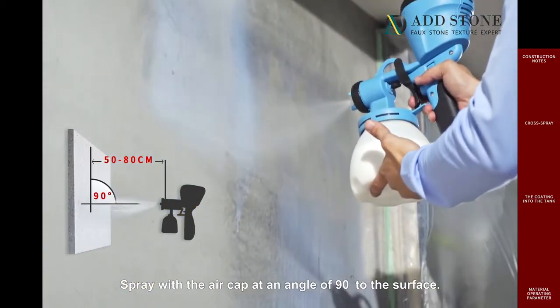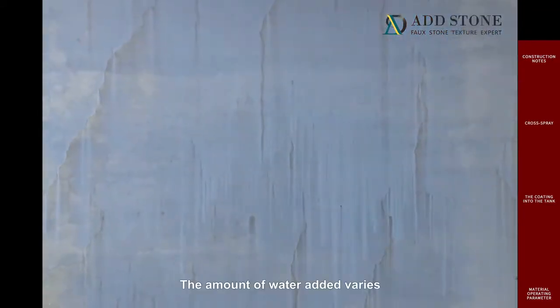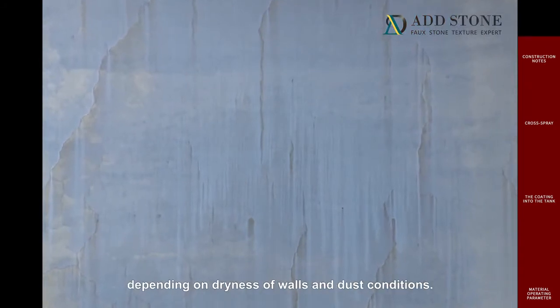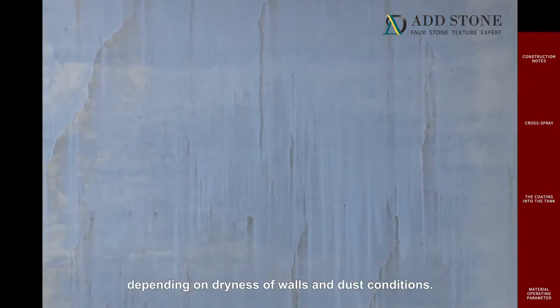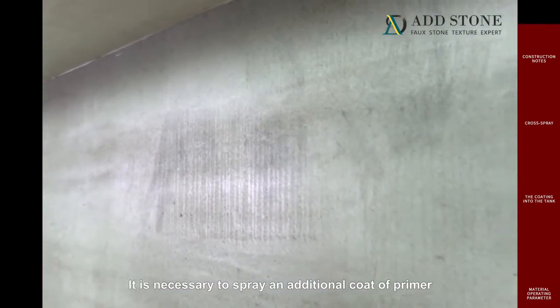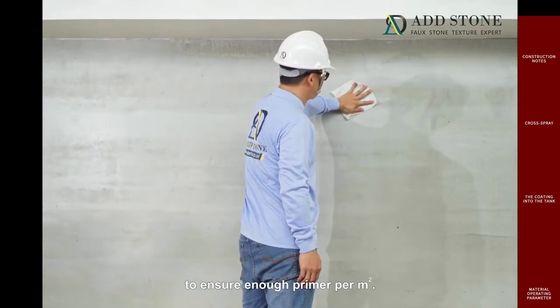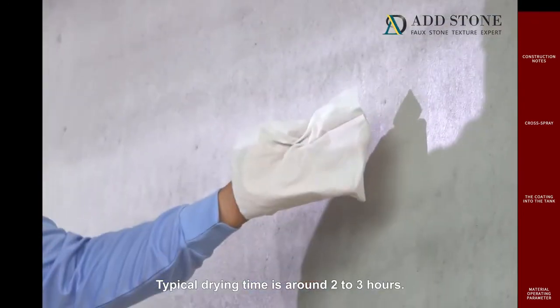Spray with the air cap at an angle of 90 degrees to the surface. The amount of water added varies depending on dryness of walls and dust conditions. If you add water at the ratio of 1 to 1, it is necessary to spray an additional coat of primer to ensure enough primer per meter square. Typical drying time is around 2 to 3 hours. The accurate drying time depends on the weather and the environment.